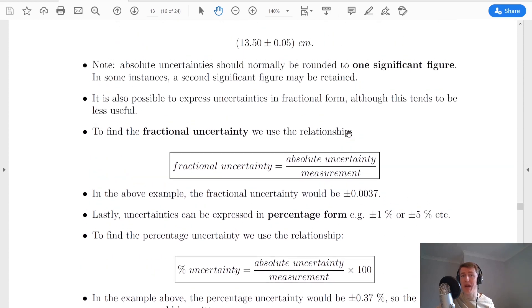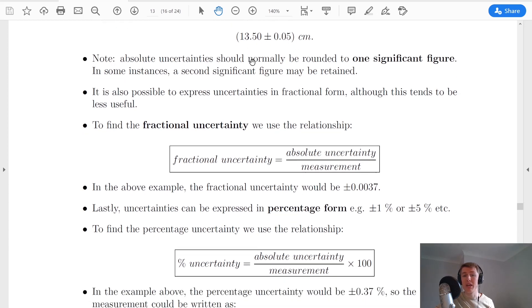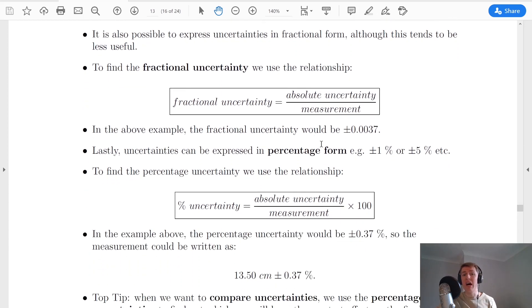If I look at the example of the pen and ruler above to find my fractional uncertainty, I would divide 0.05 by 13.50, i.e., divide my absolute uncertainty by my measurement. Doing that you should get a value of ±0.0037.